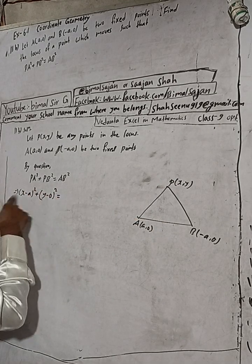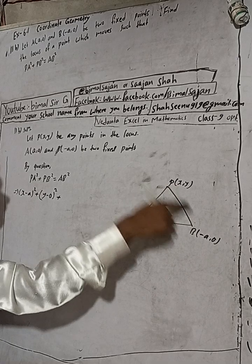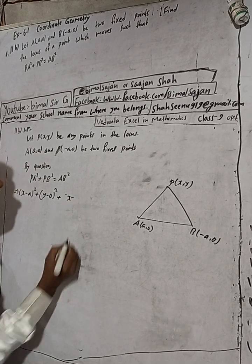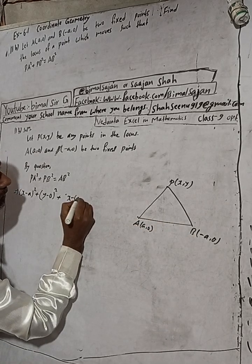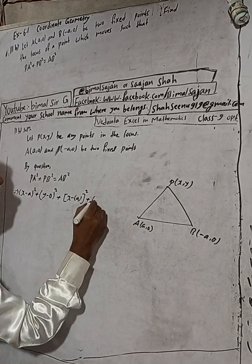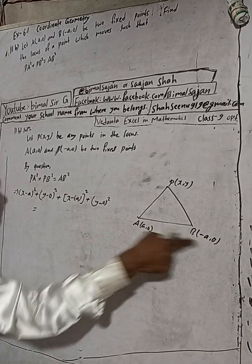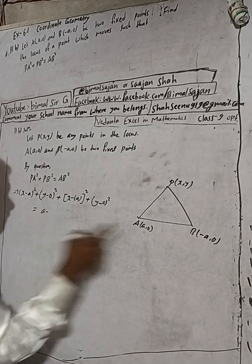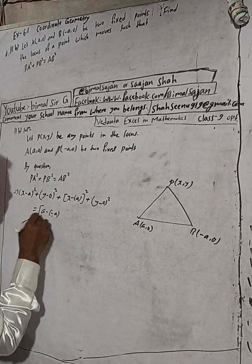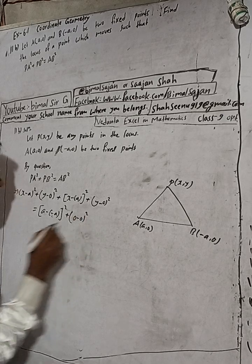Plus PB² means (x - (-a))² + (y - 0)², which is (x + a)² + y². This equals AB², where AB² = (a - (-a))² + (0 - 0)² = (2a)², and (0 - 0)² = 0, so AB² = 4a².